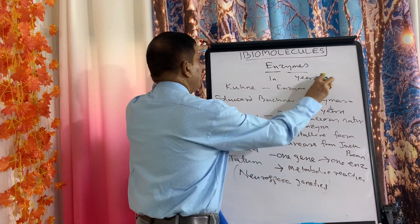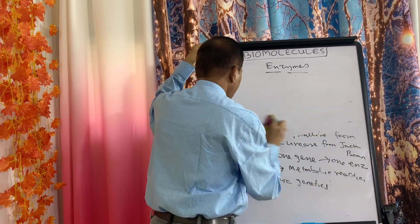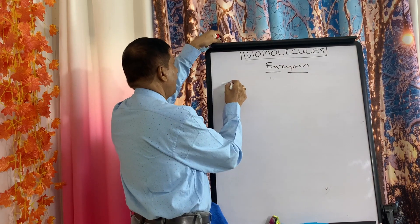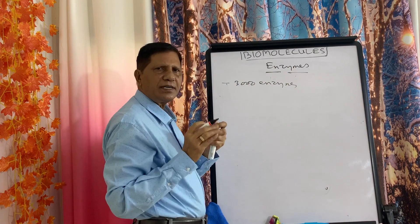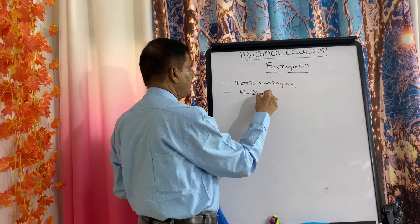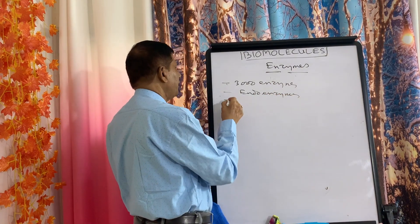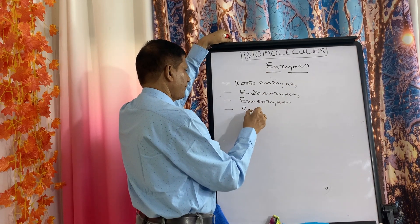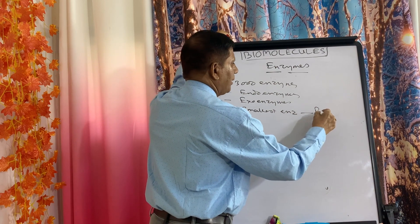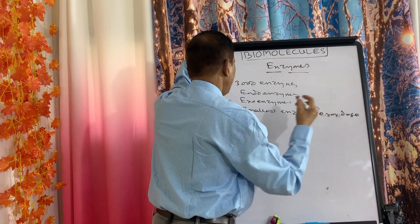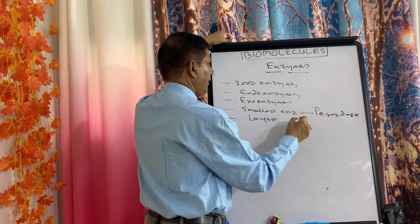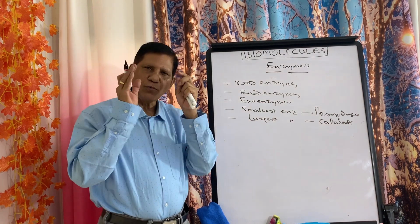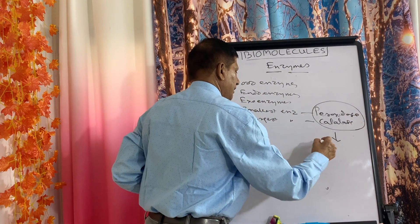Inside the cell, around 300 enzymes are present. When they are present inside the cell we call them endo-enzymes, but when they function outside the cell we call them exo-enzymes. The smallest enzyme is peroxidase and the largest enzyme is catalase. Both peroxidase and catalase are present in only one organelle — the peroxisome.